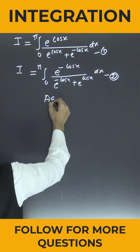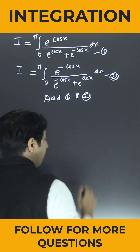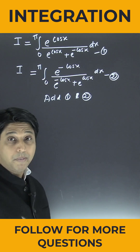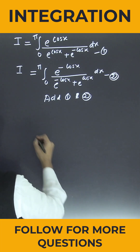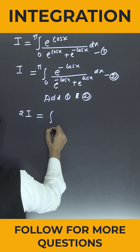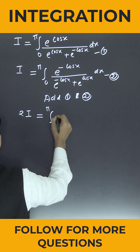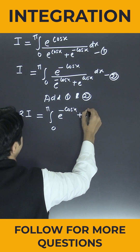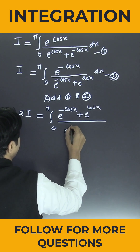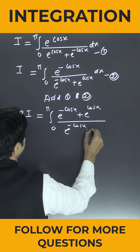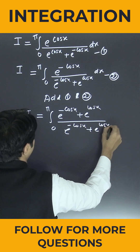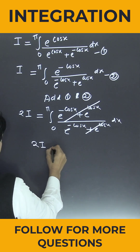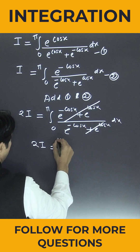Now I am going to add equation number 1 and equation number 2. When you add them, the denominators are the same. The numerators add, so 2I is nothing but integration from 0 to π of [e^(-cos x) plus e^(cos x)] divided by [e^(-cos x) plus e^(cos x)] into dx. This and this cancel out.